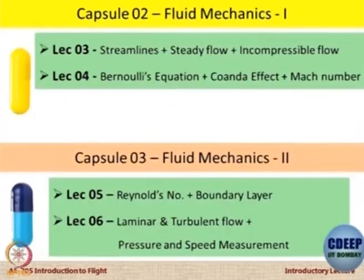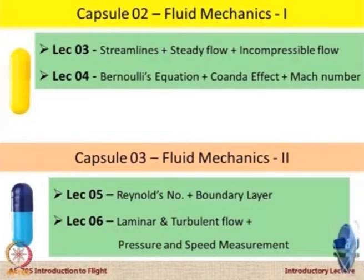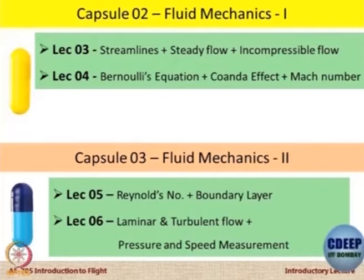Capsule number two will be on the first part of fluid mechanics, or introductory fluid mechanics. The contents are listed there. The third capsule will delve further into fluid mechanics — Reynolds number, boundary layer, types of flows, and how to measure pressure and speed.